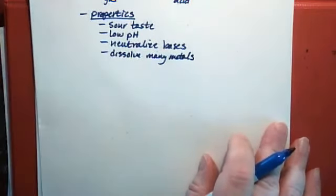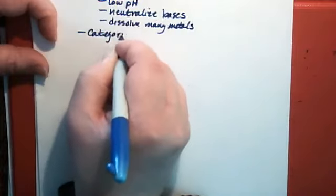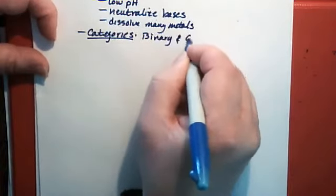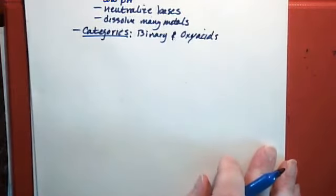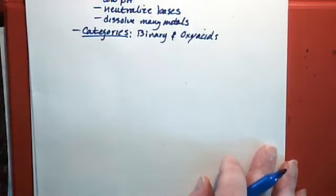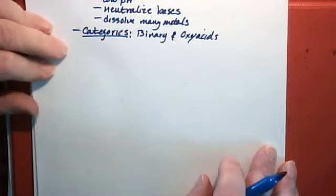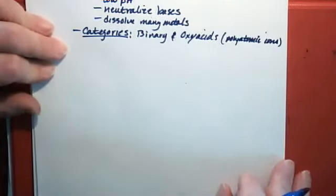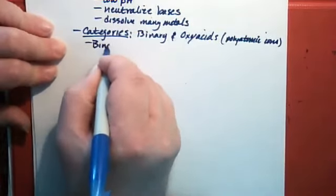And many metals dissolve in acids, but not all of them. There are essentially two categories of acids that we need to be aware of for naming purposes right now. There are binary acids and there are oxyacids.